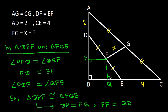So triangle DPF will be congruent to triangle FQE. That means DP will be congruent to FQ, and PF will be congruent to QE. So if DP is A, then FQ will be A, and if PF is B, then QE will be B.